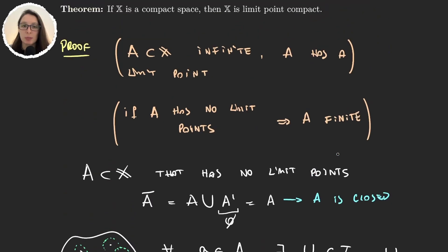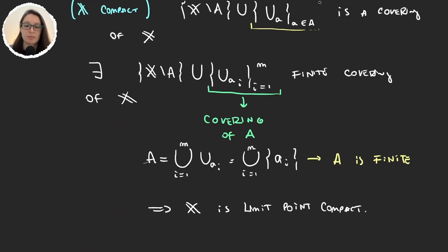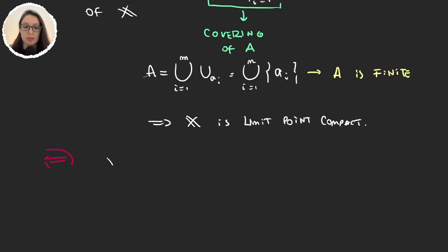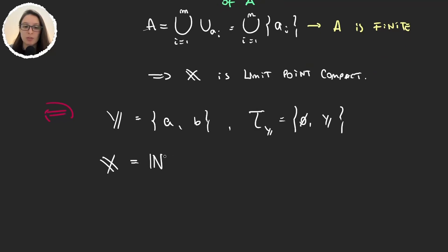So compact implies limit point compact. But is the reciprocal valid? We will see that it is not, with an example. For this we will take Y to be a set consisting of only two elements a and b with the trivial topology, and we will consider X as the product space of the natural numbers times Y. So all elements in X are of the form n×a or n×b for n a natural number. It's easy to notice that X is not compact because any covering of X would not have a finite subcovering, since we still have to cover all the natural numbers.